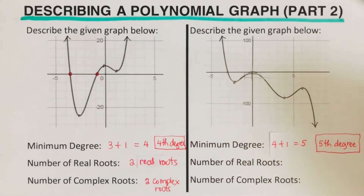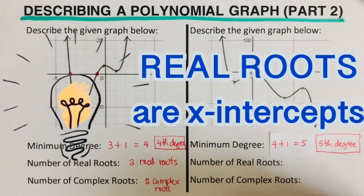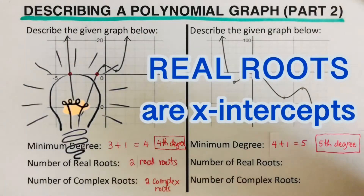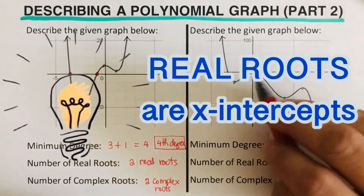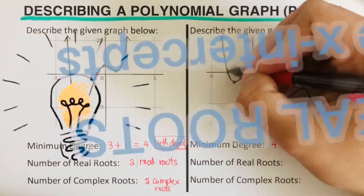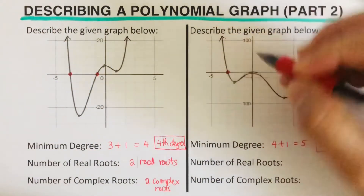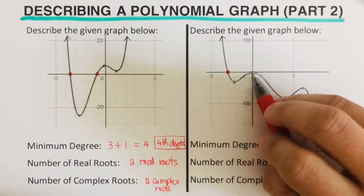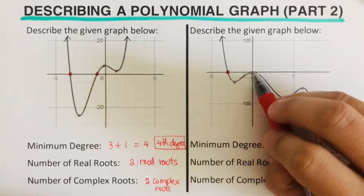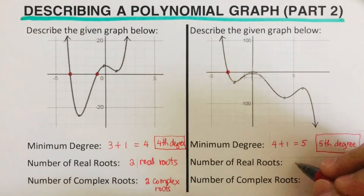Let's determine the number of real roots. By definition, real roots are the x-intercepts. In this problem, there is only one x-intercept on the graph — the other point is barely touching and not actually crossing. So we have only one real root.